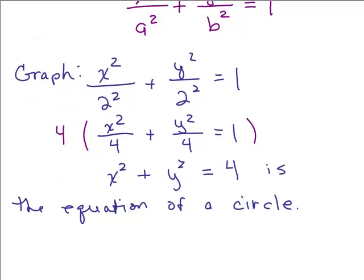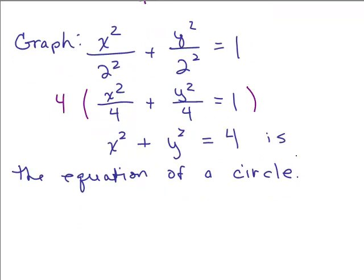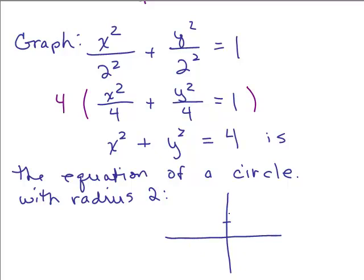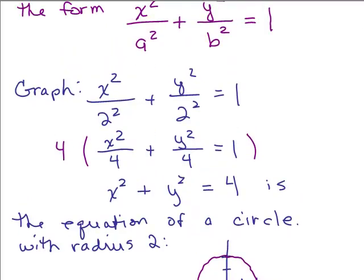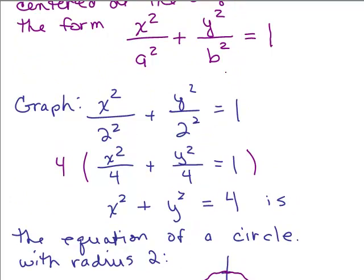So you might think: wait, I was talking about an ellipse and I get an equation of a circle. This is the equation of a circle with radius 2, because 4 is 2 squared. So if I were going to graph it, the center is (0, 0) and we would just go 2 spaces in each direction. The difference is when a and b are different numbers. If they're the same number in this form, you can directly write it as a circle and graph it.